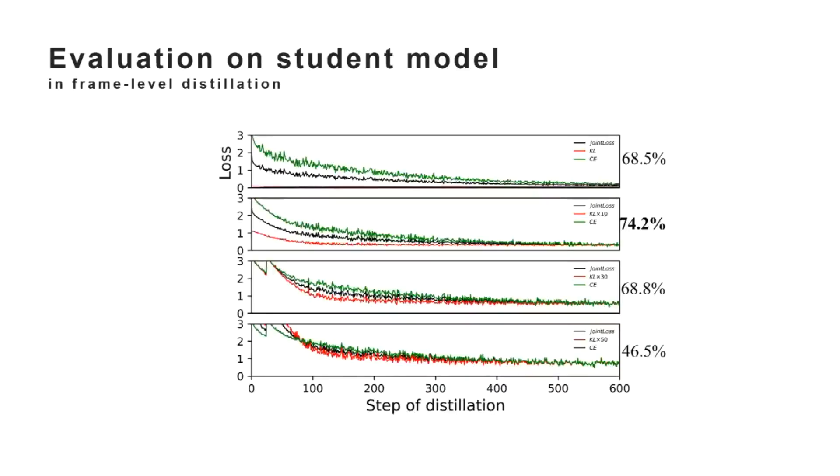More balance coefficients are explored to show the effectiveness of the joint loss function we propose. From this figure, it can be observed that the closer the gradient between the KL and CE at the beginning of the training step, the more efficient the distillation.